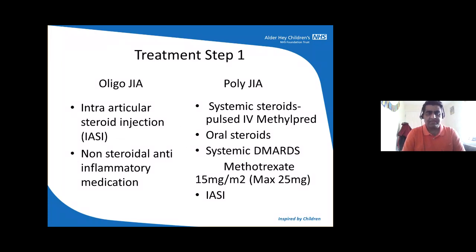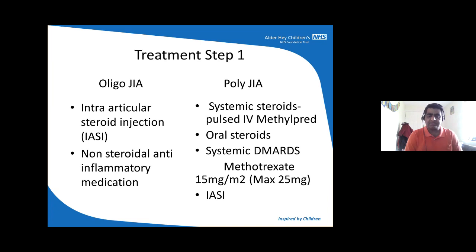Step one treatment for oligoarticular JIA focuses on intra-articular steroid injections after a course of non-steroidal anti-inflammatory medication. However, in patients with polyarticular JIA presentation, we start them on systemic steroids — intravenous methylprednisolone followed by a course of oral steroids — and we also start systemic disease-modifying agents, the first line being methotrexate. The dose in children is 15 mg/m², capped at 25 mg maximum. After IV steroids, joints that are still symptomatic get intra-articular steroid injections.